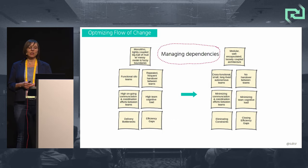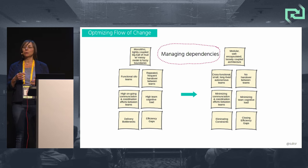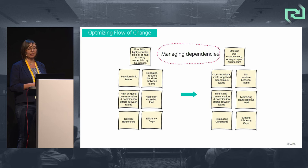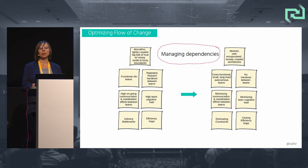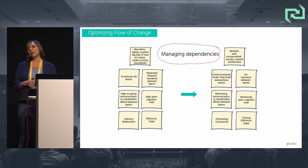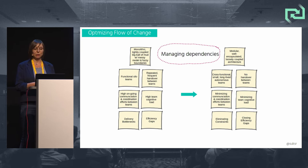Optimizing for fast flow of change requires managing our dependencies and constraints. A modular, well-encapsulated, loosely coupled architecture enables teams to move forward safely and quickly with a high level of autonomy and low risk of breaking things. With cross-functional small autonomous teams, we make repeated handovers redundant, minimize communication and coordination efforts, establish well-defined ownership boundaries, minimize cognitive load, eliminate constraints, increase overall performance, and close efficiency gaps.